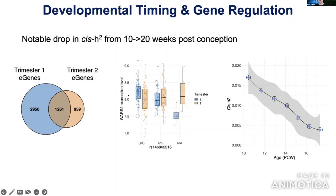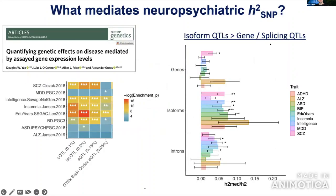We can quantify heritability across post-conception age using a sliding window approach, and we see a striking drop in gene expression heritability over developmental time — surprising but quite interesting. Taking this atlas, we can now hone in on where and how neuropsychiatric GWAS trait mechanisms may be mediated in the developing human brain using MESC, or Mediated Heritability Analysis, developed by Sasha Gusev's lab.